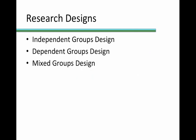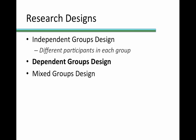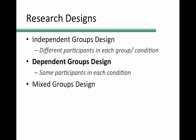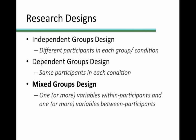In review, we can have an independent groups design, where different participants participate in each condition of the independent variable. Or we can have a dependent groups design, where the same participants participate in each condition. Finally, we can have a mixed design with two or more independent variables — one in which all participants participate in all conditions, assessed within participants, and the other in which different groups of participants participate in each condition, assessed between participants.